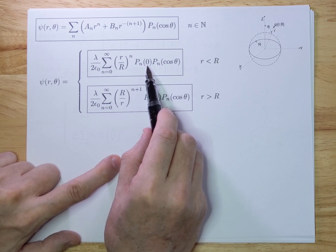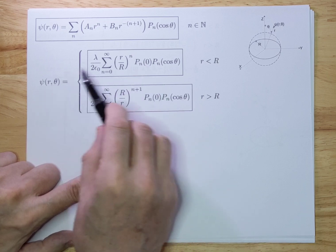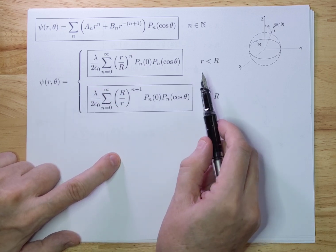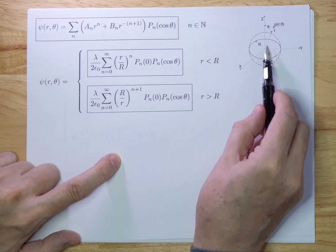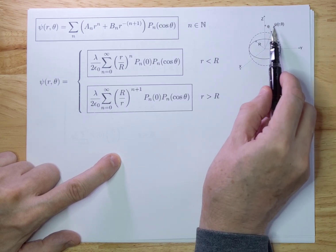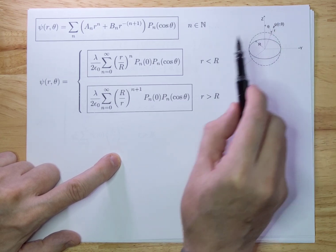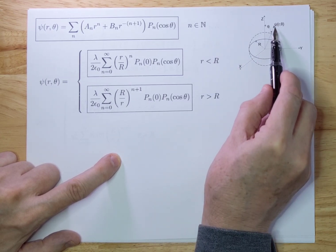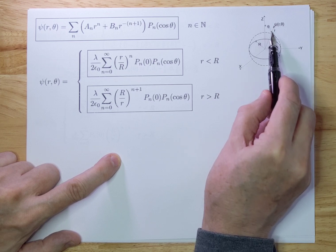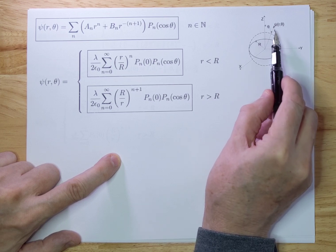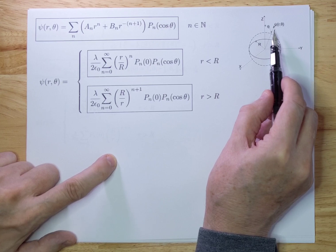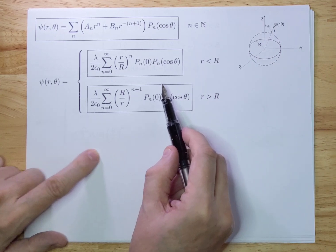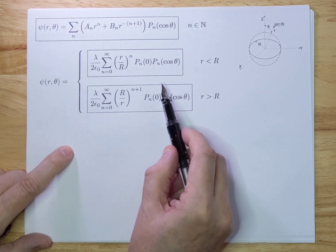That gives you an idea of how you can solve these rather complex problems. It's very complex to calculate this directly from first principles with a theta in there — it becomes really complicated. This approach combining Laplace's equation and first principles on the z-axis makes it tractable.